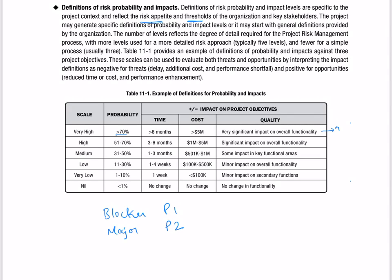So we may prioritize P1, P2. Sometimes the risk, if it becomes an issue, then it becomes a blocker — then you go and look into that. If some risks have become major issues, it becomes a P2. So understand this: you have to prioritize your risk.